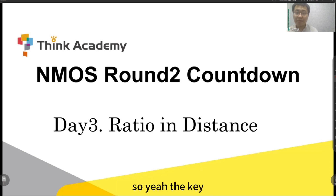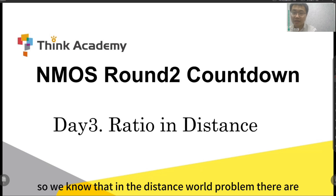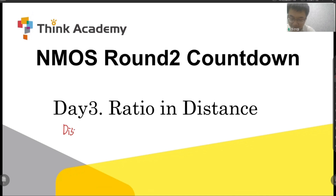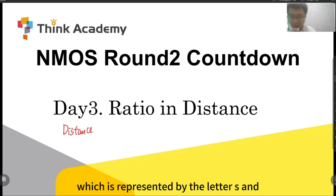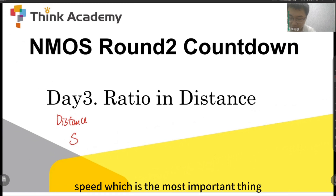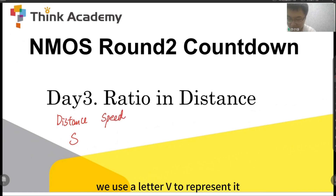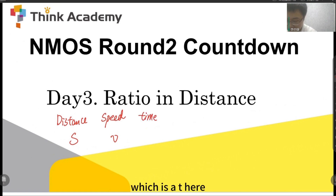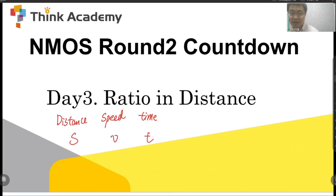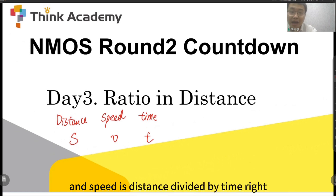The key point to solving many difficult questions is just to use the ratio. In distance word problems, there are three different things: distance, which is represented by the letter S; speed, which is the most important thing, represented by the letter V; and finally, time, which is T. We know the relationship between these three as: distance equals speed times time, and speed equals distance divided by time.